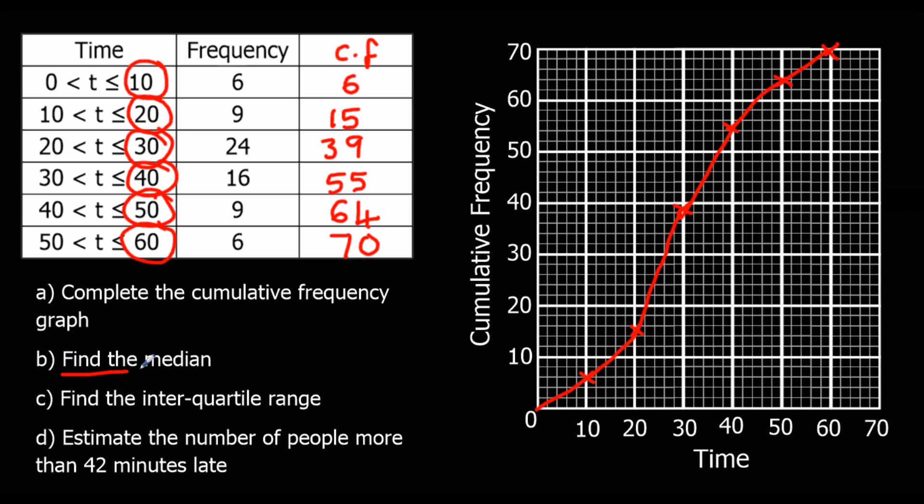So then we're asked to find the median. So if there's 70 people, if there's 70 on the frequency, we want halfway, which is 35. So again with a ruler, if we can go from 35 across and down from there. So that comes out as 28 seconds. So this isn't the answer. That's what we're looking for. And the answer is 28 seconds.